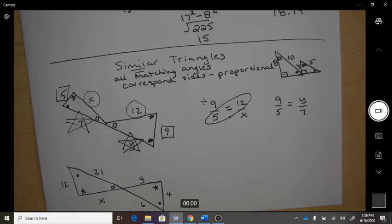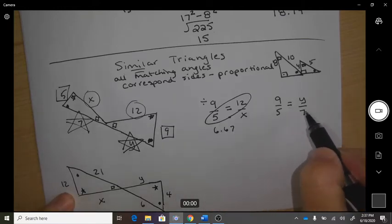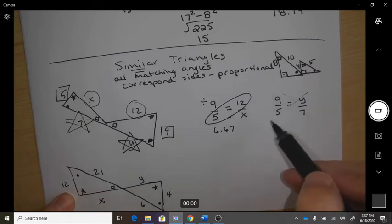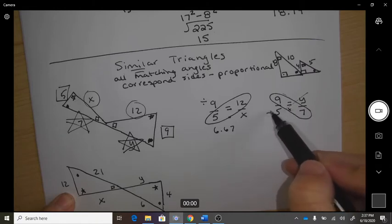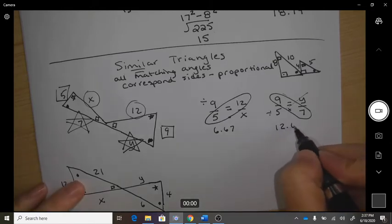So 5 times 12 and then divide by 9, so that gives me 6.67. And here to cross multiply, the two that match are 9 and 7 to multiply and divide by 5, and I get 12.6 for y.